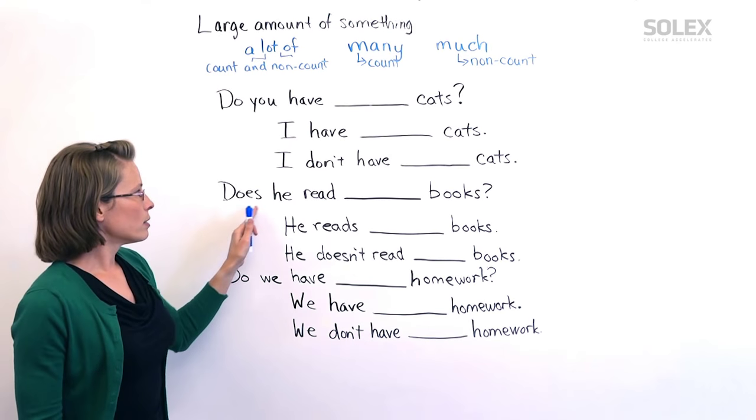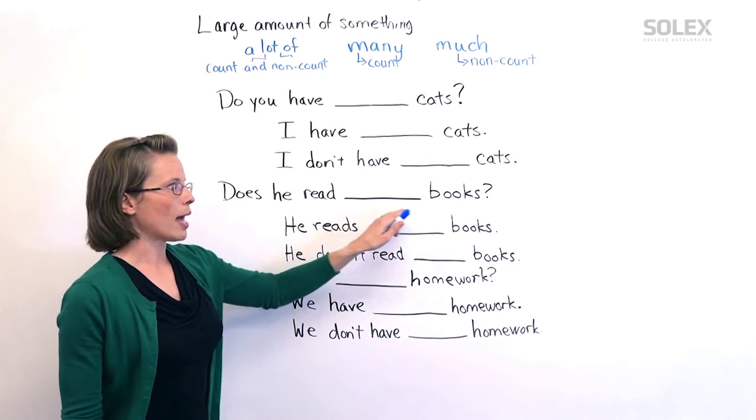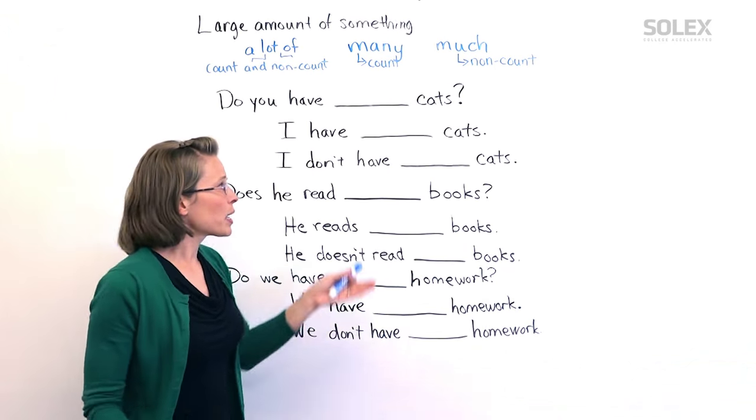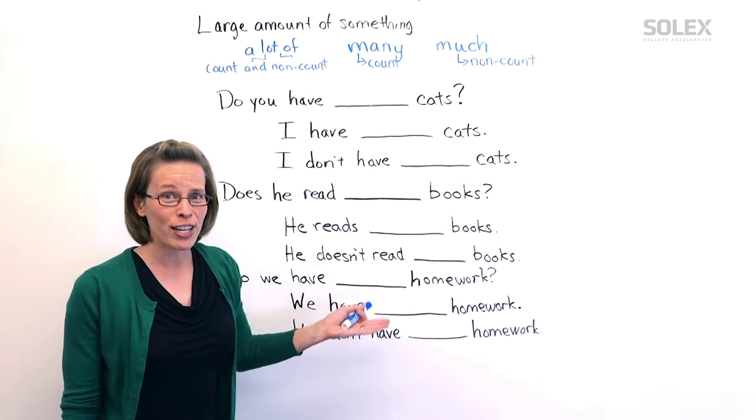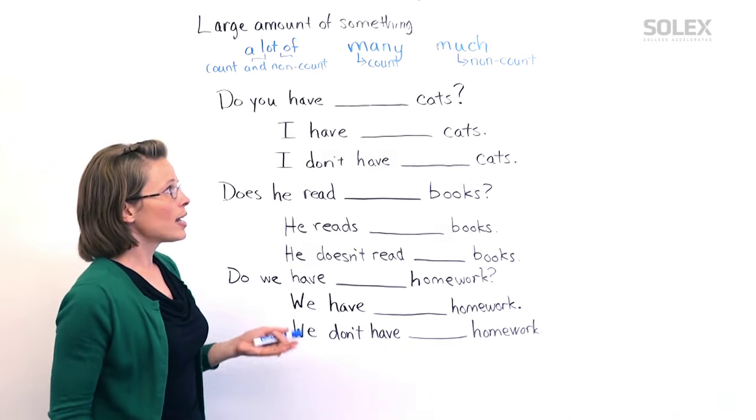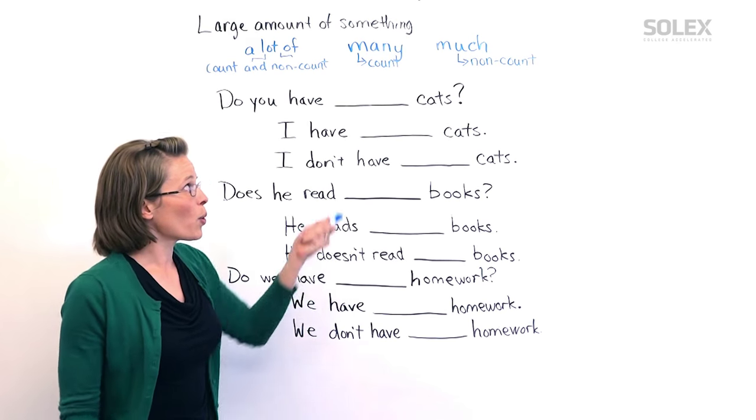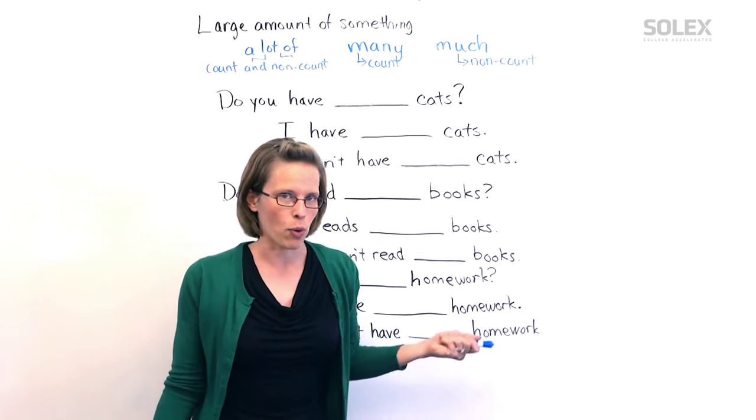Same thing here. Does he read a lot of books? We can skip all of this because a lot works in every single one of these. Now, you say, well, if we have a lot and it works for all of these, then what do we need many or much for?